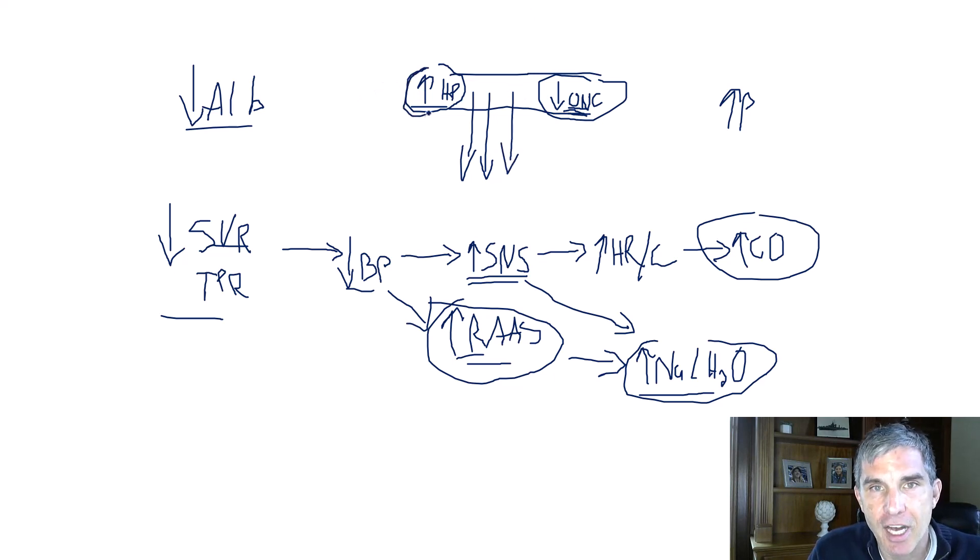So this combination, high hydrostatic pressure from portal hypertension, low oncotic pressure from low albumin, these two things coupled with retaining sodium and water by the kidneys, it all conspires to drive lots of fluid out of vessels and into the abdomen causing ascites.